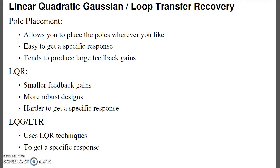Pole placement, or Basscura, allows you to place the poles wherever you like. It's very easy to get a very specific response as a result, but the problem with pole placement is you tend to have large feedback gains, and it's unclear what to do with multiple inputs.